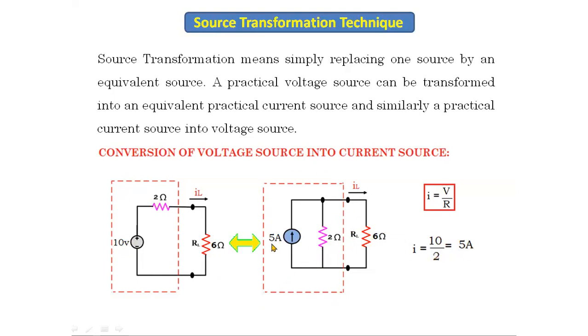In summary: a practical voltage source is one voltage source connected in series with a resistor, and a practical current source is one current source connected in parallel with a resistor. Now let's see how to convert a current source to a voltage source.